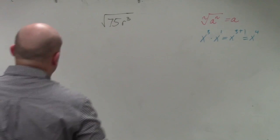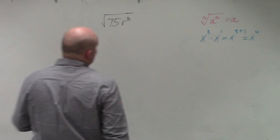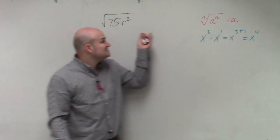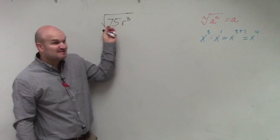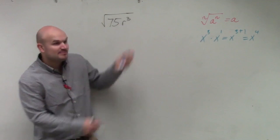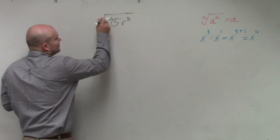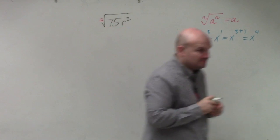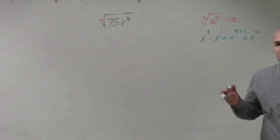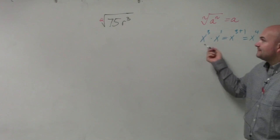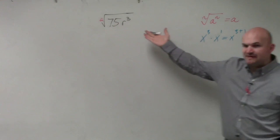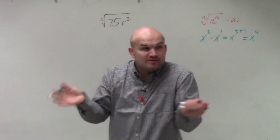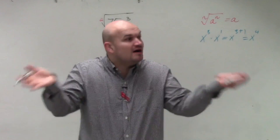Again, the same thing is we want to be able to rewrite this so we can apply our identity element. The problem is 75 is not a square number. Remember, if there's no number in front we can assume the index is 2. So the issue is 75 is not a square number, and what we want to do is rewrite it in terms of a square number.